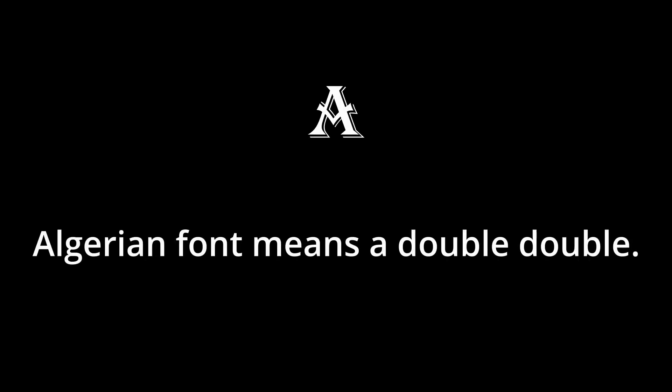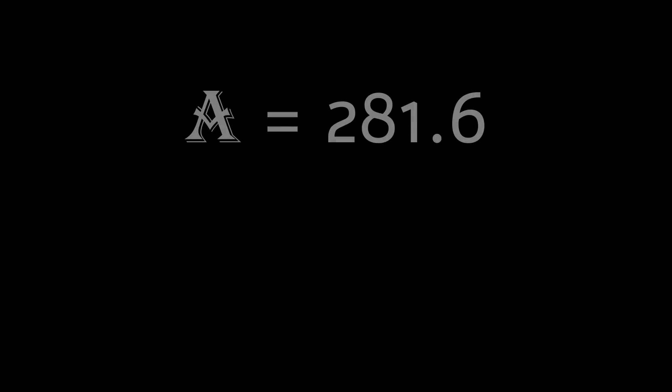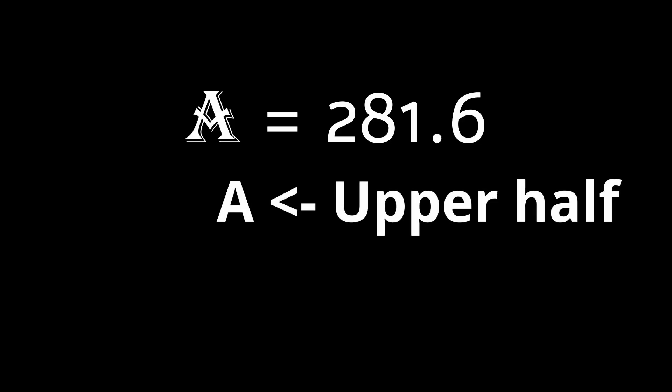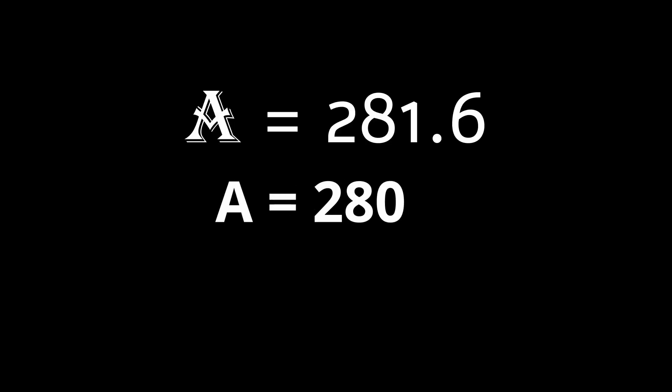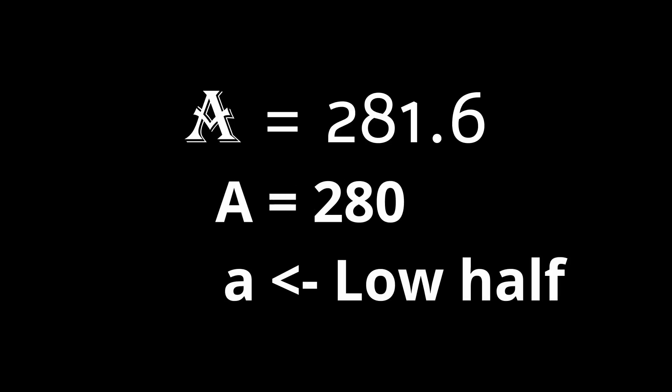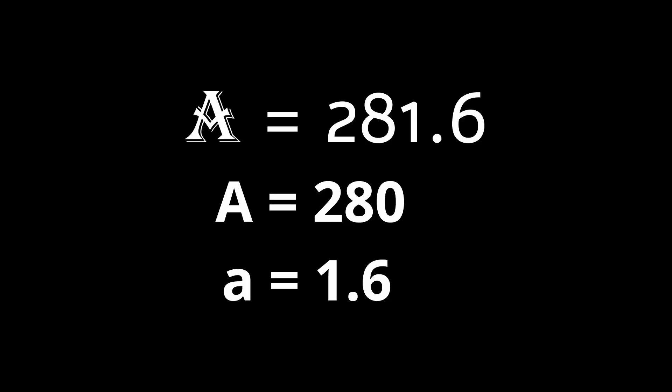Before we dive into that, I just want to explain the representation that I'll be using. I'm going to use Algerian, this special font, to represent a double-double. A equals 281.6. In our little two-digit system, that's a double-double. And then to represent the upper half of that, I'm going to use a capital letter. So, capital A equals 280. And then for the lower half, I'll use a lowercase a. So, lowercase a equals 1.6. Capital letters represent the upper half of the double-double. And lowercase letters represent the lower half.